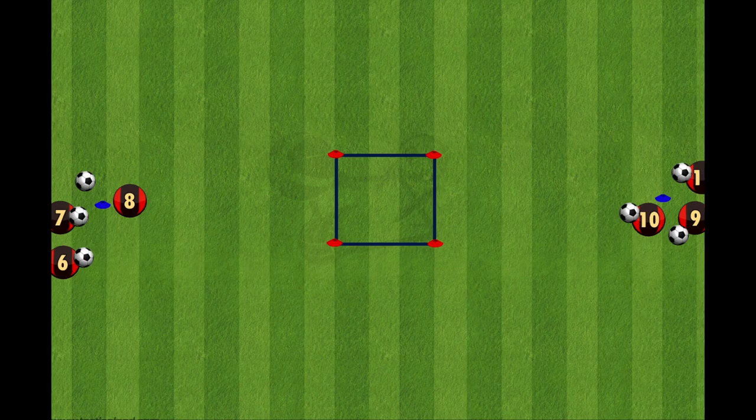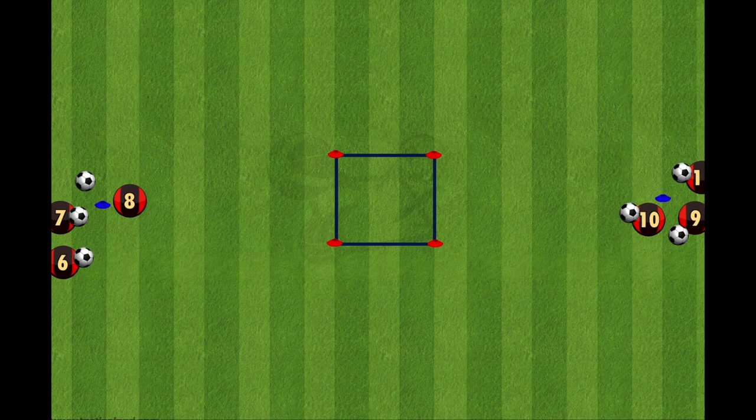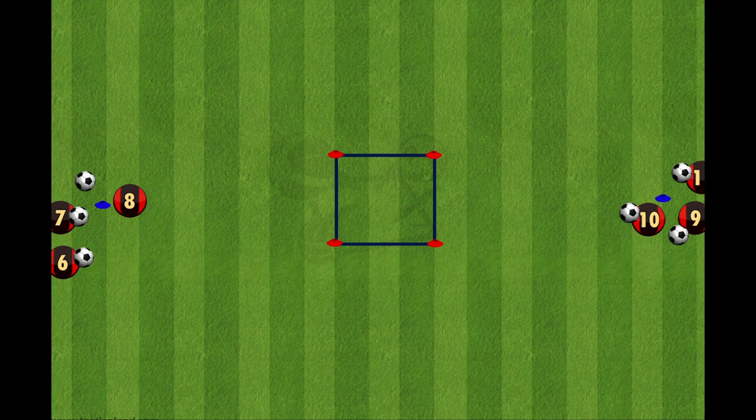The setup of this drill is very straightforward. You need a square in the middle and then two cones, one to the left, one to the right, around 5-7 yards away from the square. The square can be anything from 2 up to 5 yards depending on what age group you are practicing.